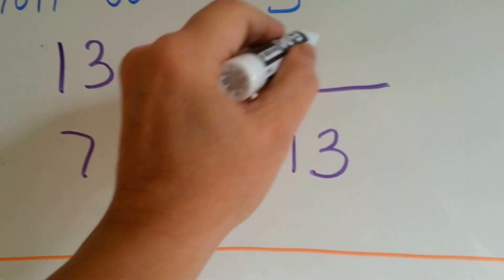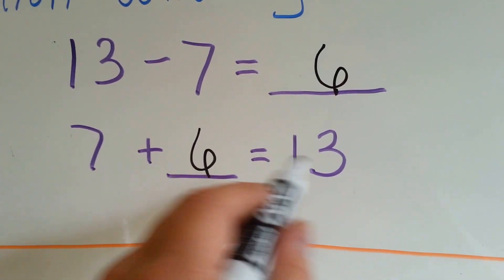So, 13 take away 7 is 6 because 7 plus 6 equals 13.